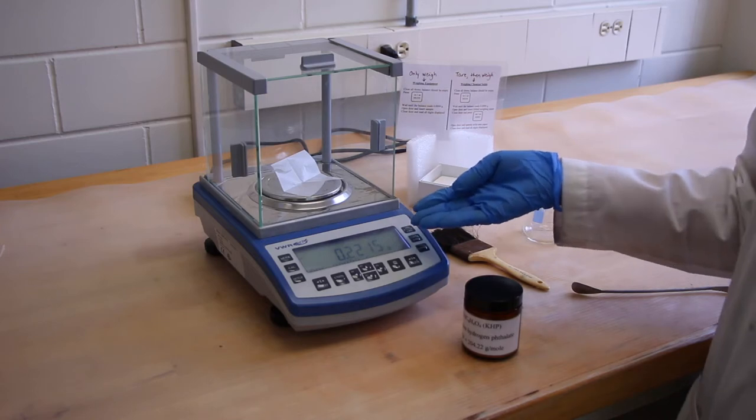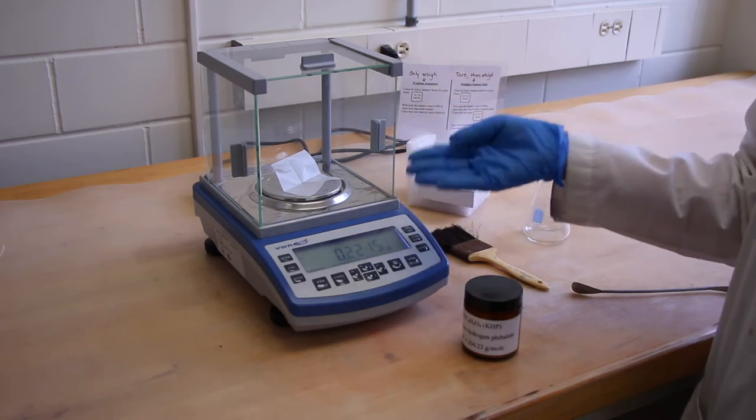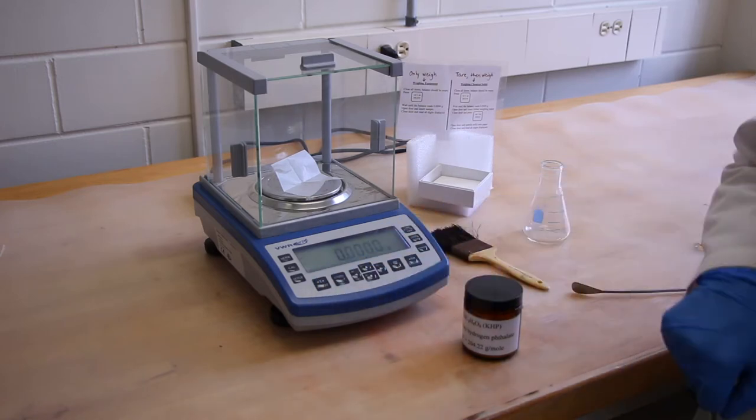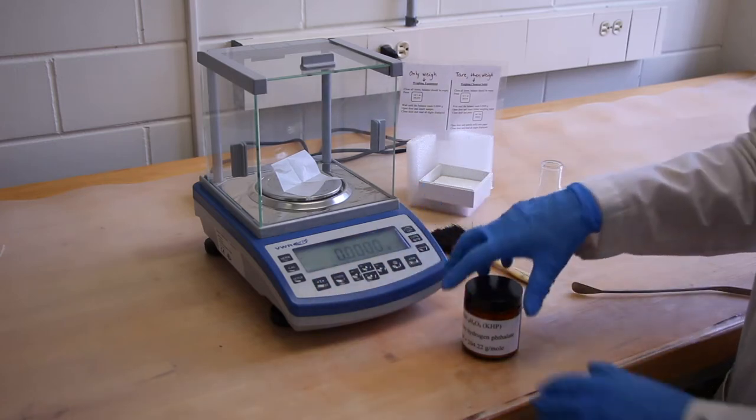And we're going to tare that out, or subtract that value. And so we hit the tare button. And now our scale reads zero.